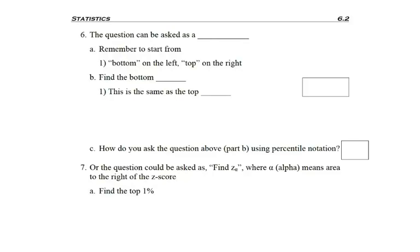There are a couple different ways you can be asked to find a z-score. One way is to find a percentile. Remember, with percentiles we always start from the left. On our curve, the bottom is the left of the curve and the top is another phrase for the right of the curve.